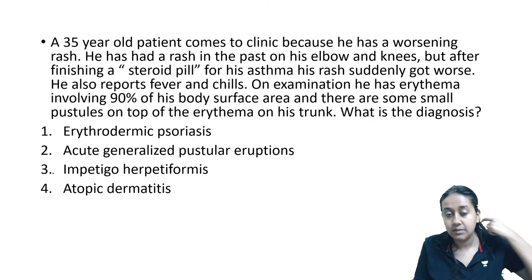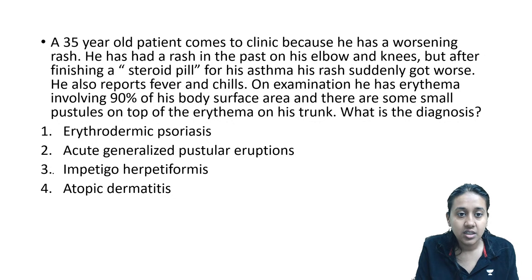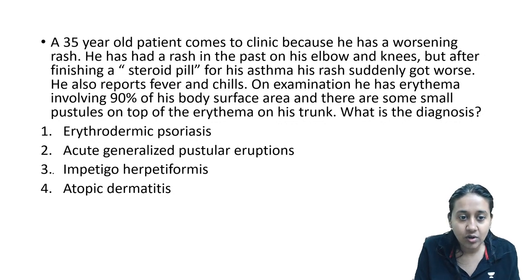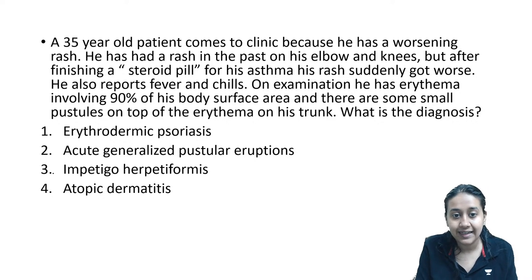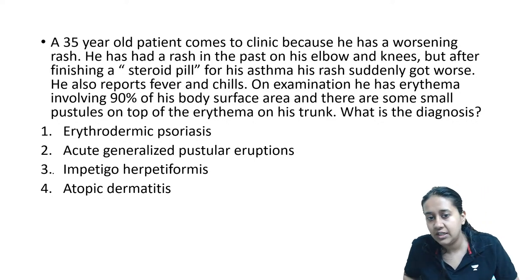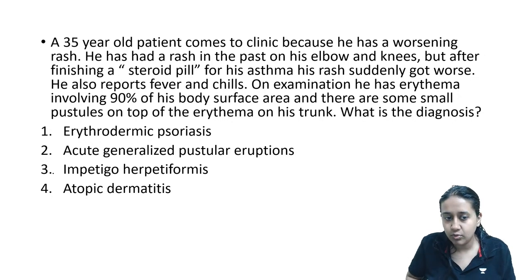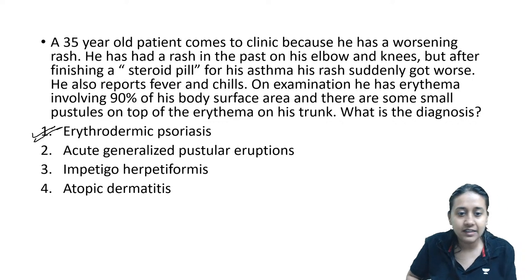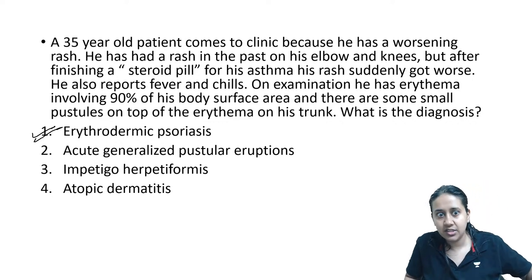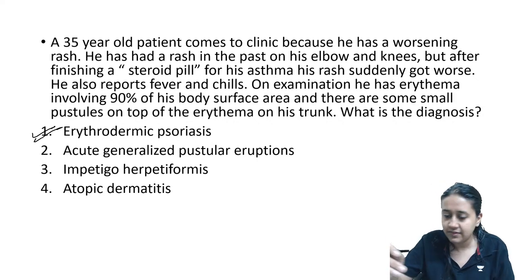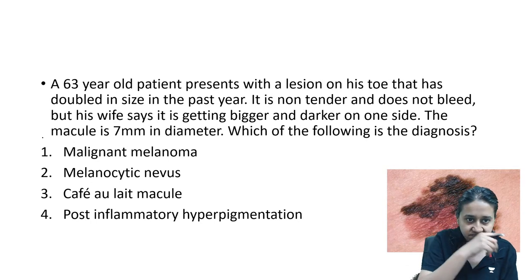A 35-year-old patient with a worsening rash — had a rash in the past on elbows and knees; after finishing a steroid pill for asthma, the rash suddenly got worse. He also has fever and chills; erythema involves more than 90% of body surface area with small pustules on the erythema of the trunk. The correct answer is erythrodermic psoriasis — the steroids were withdrawn and the lesion exacerbated.